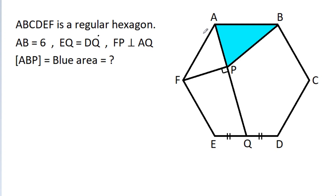In this video, we have given that ABCDEF is a regular hexagon and AB is 6. EQ is equal to DQ, and FP is perpendicular to AQ. Then we have to find the area of triangle ABP.